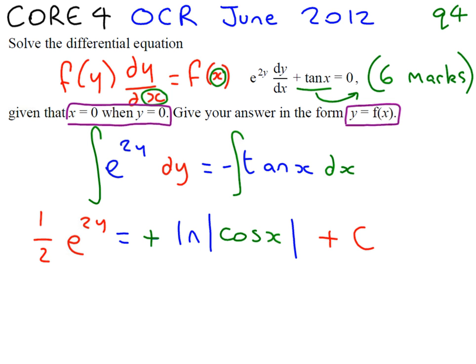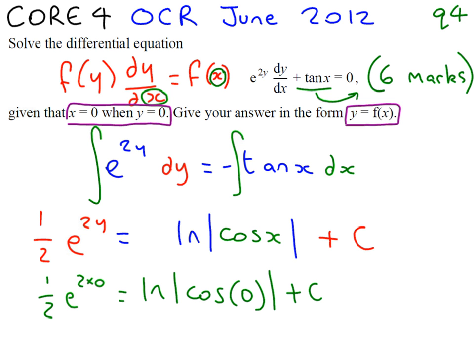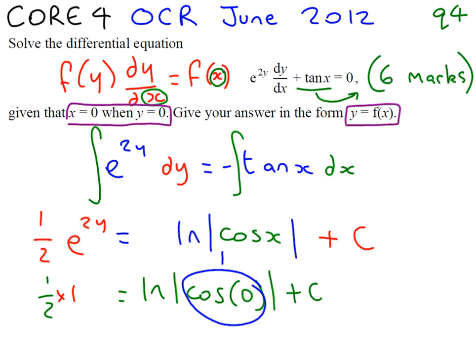Now we have to find c. When x equals 0, y is also 0, so substituting in: 2 times 0 gives us ln cos(0), which is ln(1) = 0. So that's just a half times 1 equals 0 plus c, which means c equals a half. So in our equation, we can change c to a half and carry on with the question.